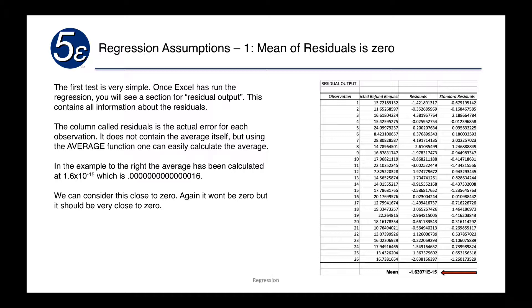As you can see we have a small number, negative 1.6 times 10 to the negative 15th power. We can consider this very close to zero. It won't be zero but it should be very close to zero. If you had a number like three or five, there's a good chance that your residuals are not close to zero.